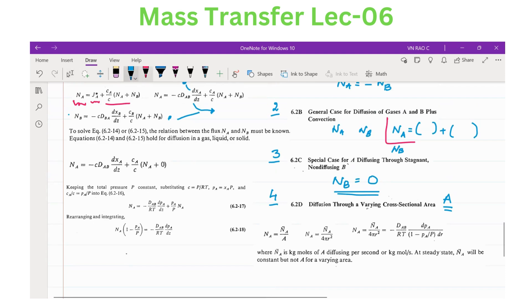If I make NB is 0 here, you can see the equation, how it has changed. NA equals minus C DAB dxA by dz plus CA by C NA.